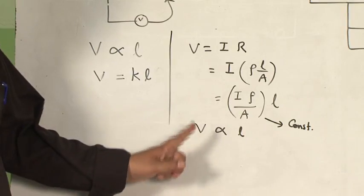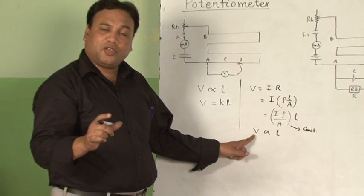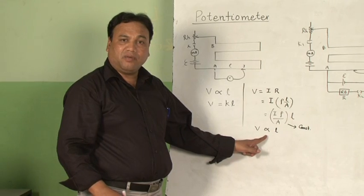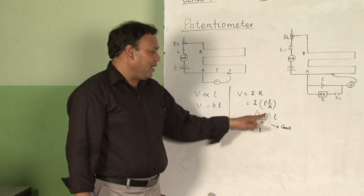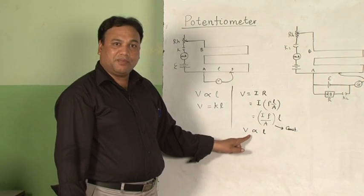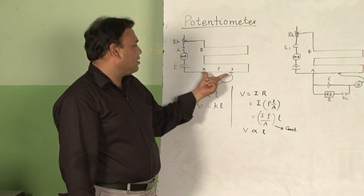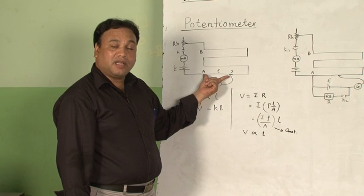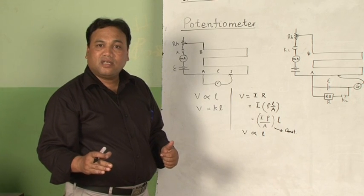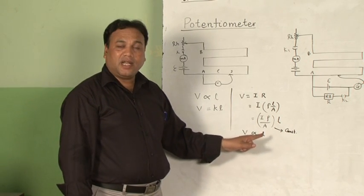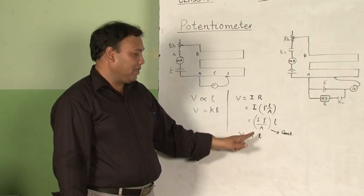Because of this reason, the potential difference across any portion of the potentiometer wire is directly proportional to the length of that portion. So the principle of the potentiometer states: the potential difference between any two points on a potentiometer wire of uniform cross section and uniform composition is directly proportional to the length of that portion when a steady current is allowed to pass through it.